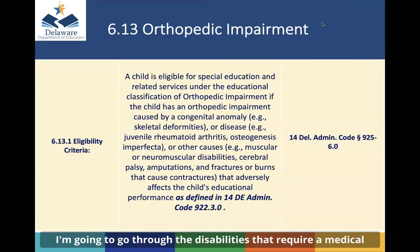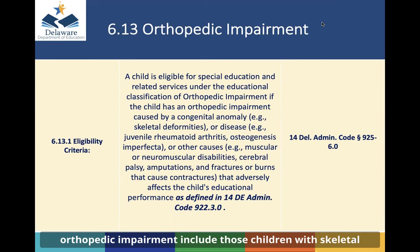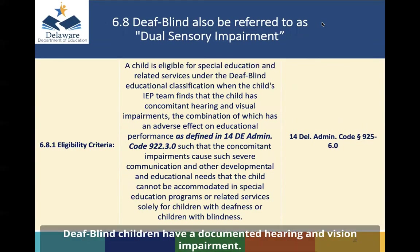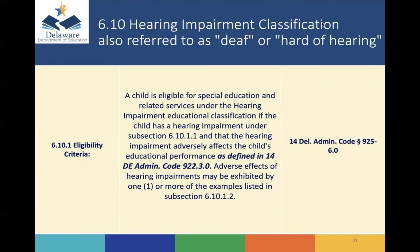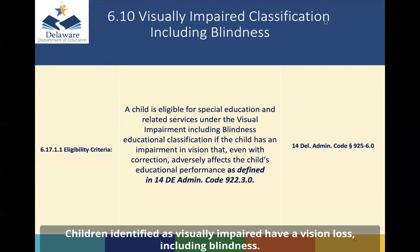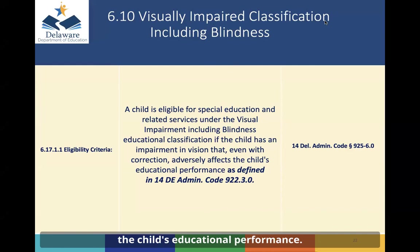I'm going to go through the disabilities that require a medical diagnosis quickly, but feel free to stop this webinar to read the details. Children eligible as orthopedically impaired include those with skeletal deformities, disease, or neuromuscular disabilities. Children identified with other health impairment have a chronic or acute health condition. Deaf-blind children have a documented hearing or vision impairment. Children identified with a hearing impairment have a hearing loss, and children identified as visually impaired have a vision loss, including blindness. The overarching takeaway is that these classifications require a medical diagnosis which adversely affects the child's educational performance.